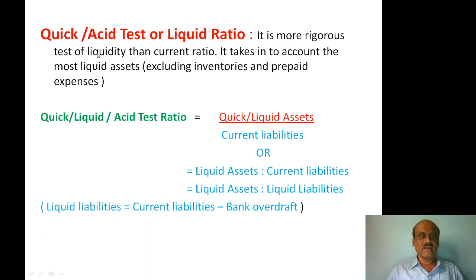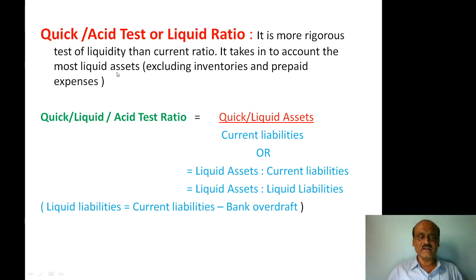Current assets include inventory, prepaid expenses, sundry debtors, bills receivable, bank balance, and cash at bank. Of these current assets, if you exclude inventory and prepaid expenses, then those remaining assets are considered liquid assets. By taking liquid assets into consideration, the liquid ratio is calculated. It is the most rigorous test of liquidity.